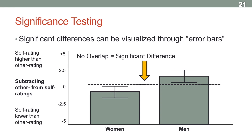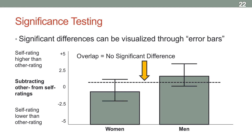The basic rule of thumb is: if there's no overlap between the error bars, there is a significant difference. But if there is overlap between the error bars, there's no significant difference. It makes for a really easy way to visualize whether or not there's a significant difference between groups.